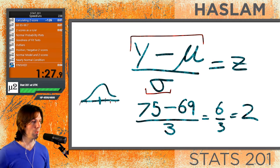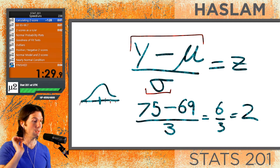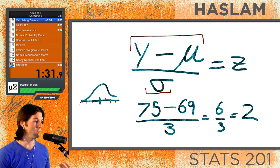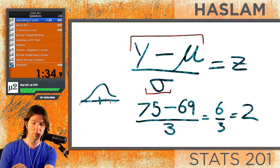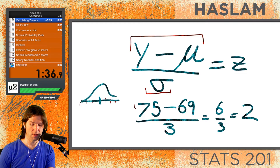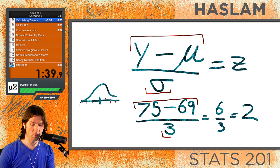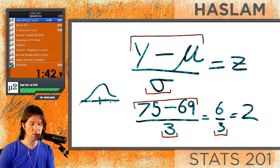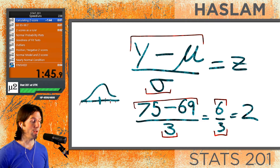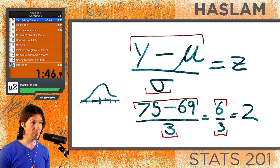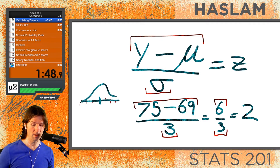This gives us a z-score of 2. A z-score of 2 means the observation was two standard deviations above the mean. We're just taking the difference of 75 minus 69 and expressing it in terms of standard deviations — how many standard deviations the observation is above or below the mean.